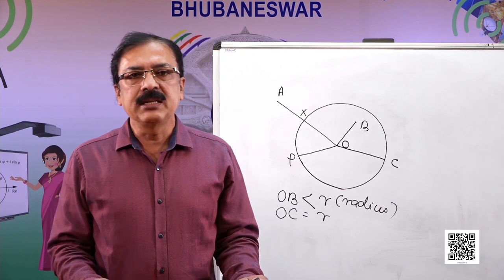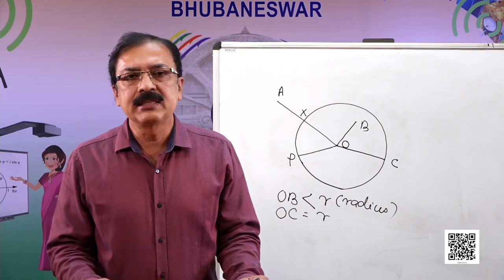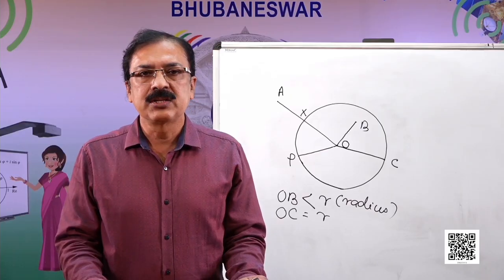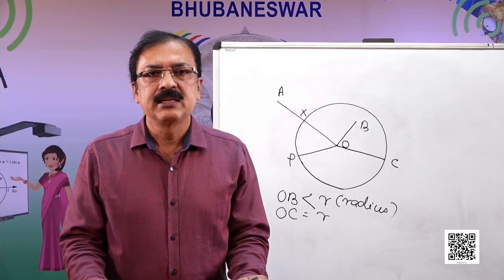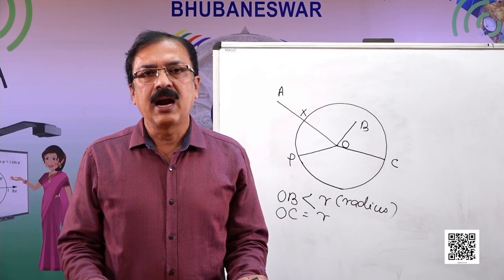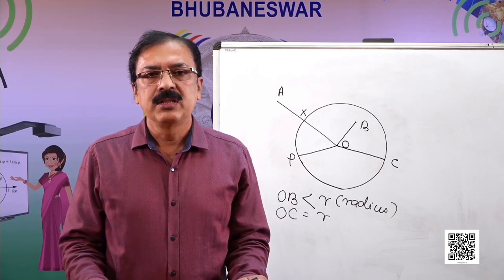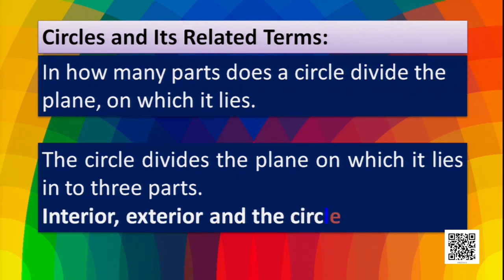In how many parts does a circle divide the plane on which it lies? One part is the circle itself, one is the interior of the circle, and the other is the exterior of the circle. So the circle divides the plane into three parts: the interior of the circle, the exterior of the circle, and the circle itself.